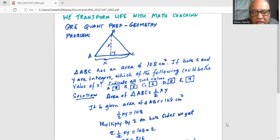So it is given that the area of triangle ABC is 108 centimeters square. So that means half times x times y is equal to 108.